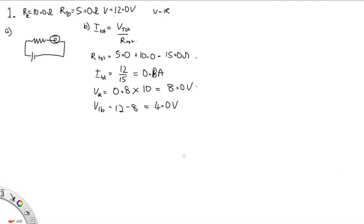Part C says on your circuit diagram indicate where you would place a voltmeter and an ammeter to measure each of these quantities. The voltmeter to measure V_R would go in parallel across the resistor, and the voltmeter to measure the voltage across the light bulb goes in parallel with it. Voltmeters are always connected in parallel with the component they're measuring. The ammeter can go anywhere in the series circuit — since the current is constant everywhere, it will measure the current through both components.